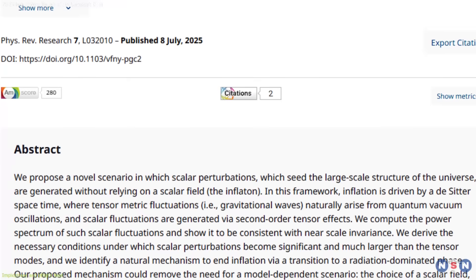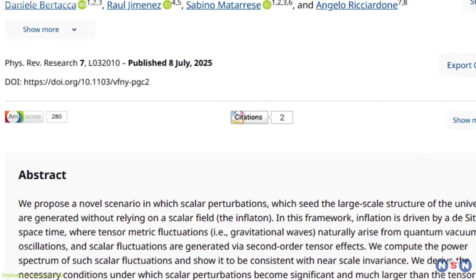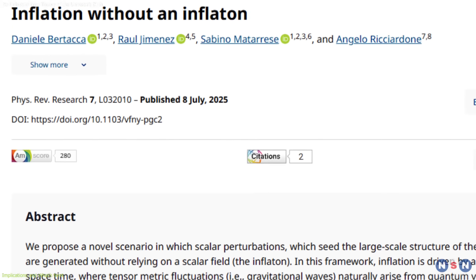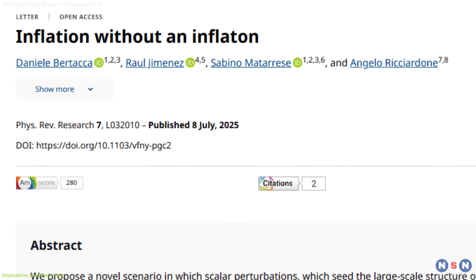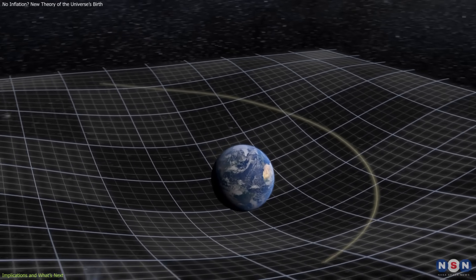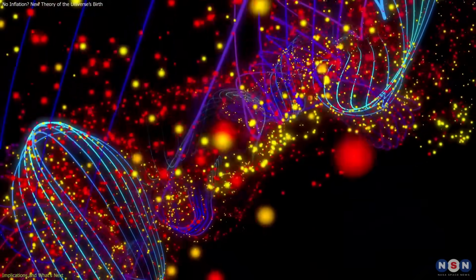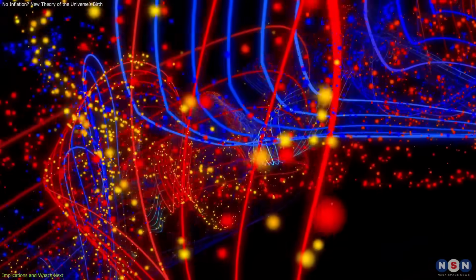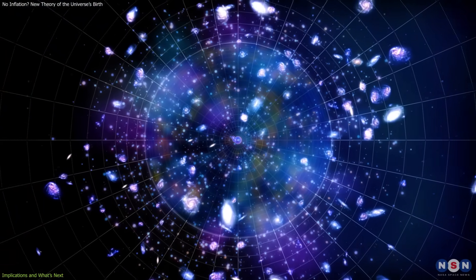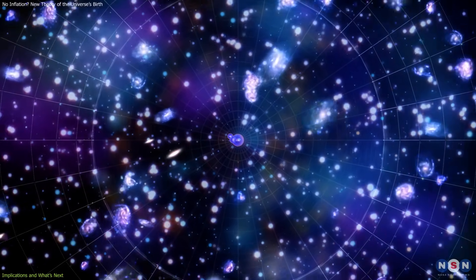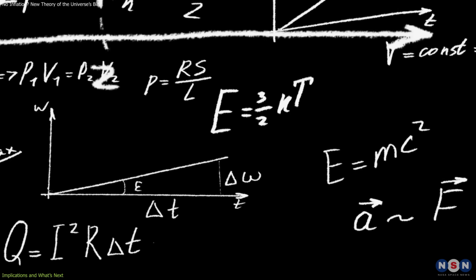The proposal also highlights a deeper principle. Explanations that minimize assumptions are powerful. Einstein's general relativity and quantum mechanics have guided physics for a century. This model suggests they may still hold the keys to the cosmos's birth, without needing to invoke new physics prematurely.